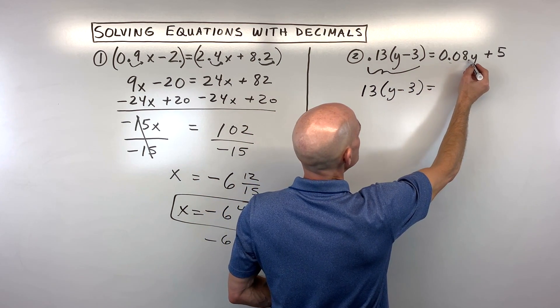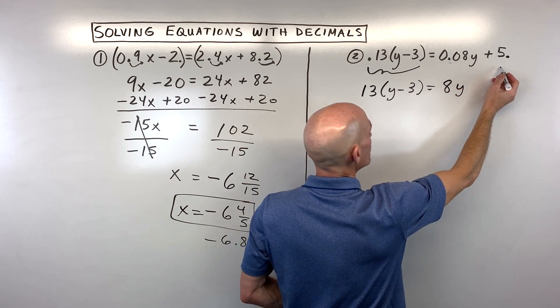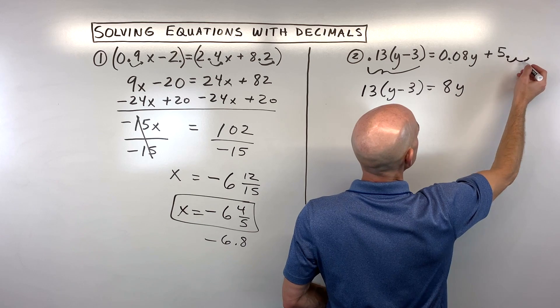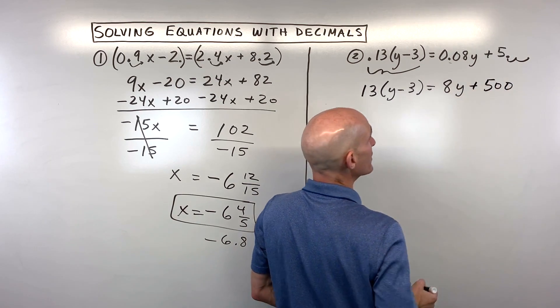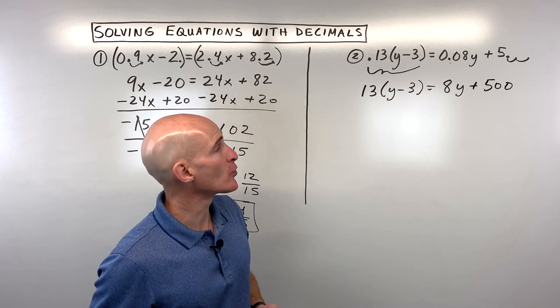And here we're going to move the decimal two places. That's going to give us 8y. And here the decimal point is right at the right side of the number. We're going to move that two places to the right which is going to give us 500. Okay, now we've cleared the decimals. This is a little bit easier to work with.